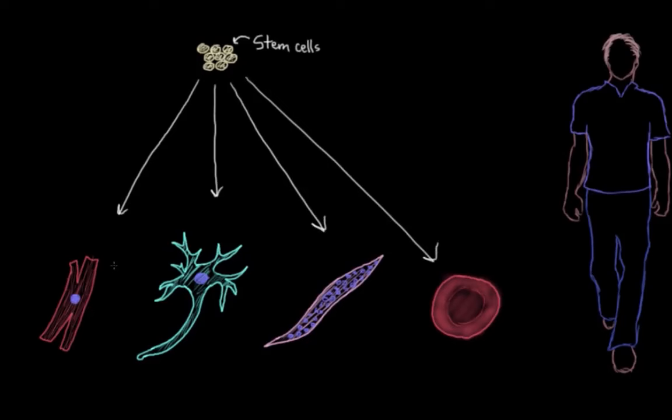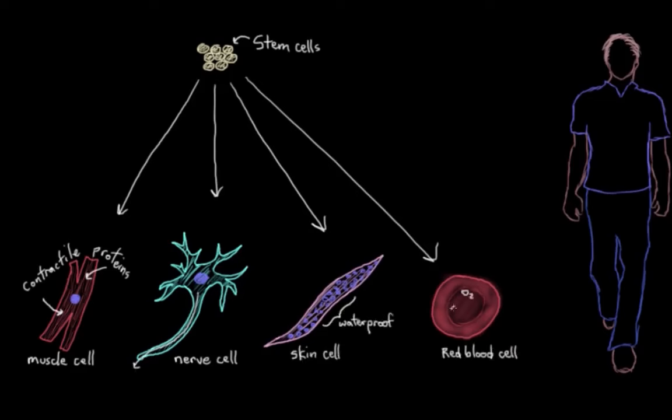So all of these really specialized cells, like this muscle cell here with its little contractile proteins, and this nerve cell that can send signals, and this waterproof skin cell, and this red blood cell that carries oxygen, all of these came from these stem cells up here which were completely unspecialized.